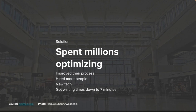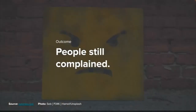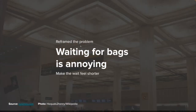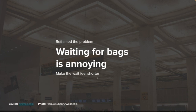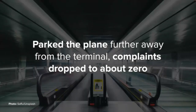They ran another survey to find out if the user experience had improved, but people still complained. So they reframed the problem. It wasn't that the time it took for the suitcases to get to the terminal was too long — seven minutes is the most optimum you can realistically get. It's just that waiting is annoying. When people are travelling they're very stressed, and when they're stressed, things seem much slower. So the goal is to make the wait feel shorter. They observed that the planes were parked very close to the terminal building. When they parked the planes further away, complaints dropped to zero.